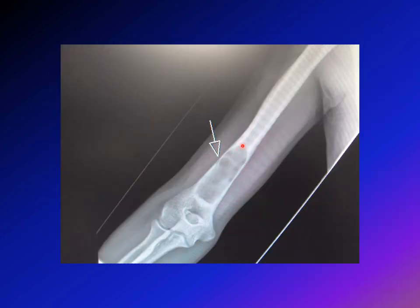Although the most common location for a unicameral bone cyst is the proximal humerus, cases can still occur in the distal humerus. Here you can see a well-circumscribed lesion with radiolucency indicating a simple bone cyst in the distal humerus.